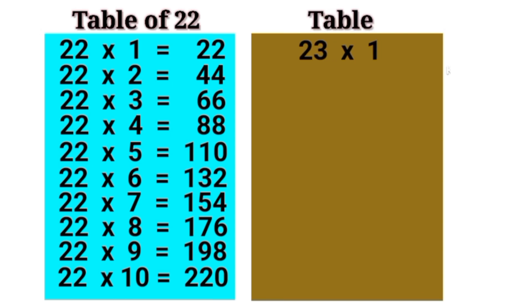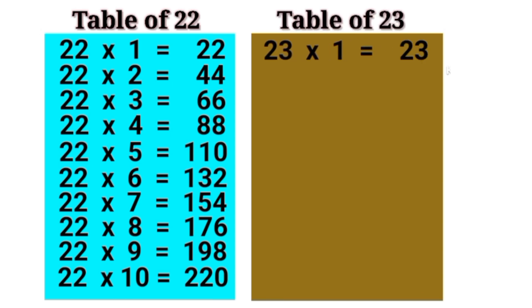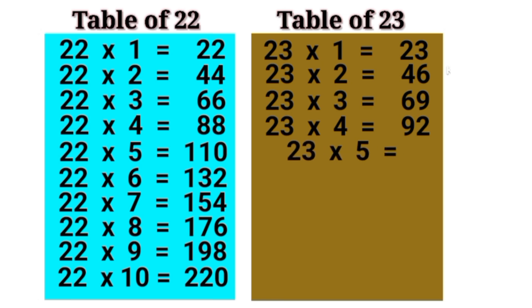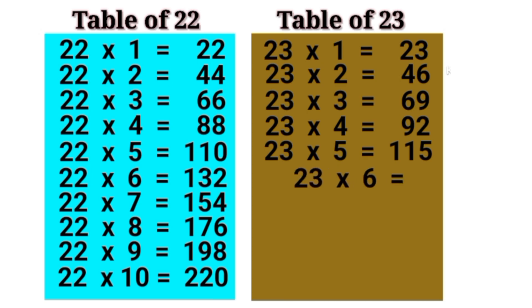23 1 is 23, 23 2 is 46, 23 3 is 69, 23 4 is 92, 23 5 is 115, 23 6 is 138.